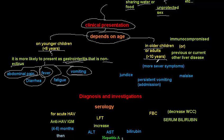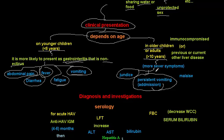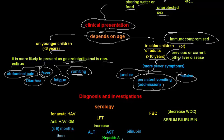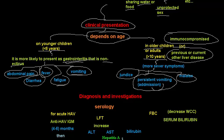In older children over ten years and in adults, symptoms are more severe. We see jaundice — it is icteric hepatitis — with persistent vomiting, which is an indication to admit the patient, plus malaise, fever, abdominal pain, and loss of appetite. Severe symptoms also occur in immunocompromised patients and those with pre-existing liver disease.